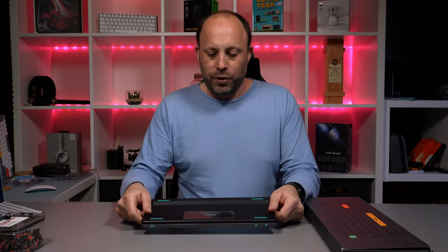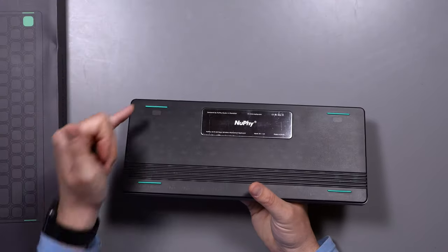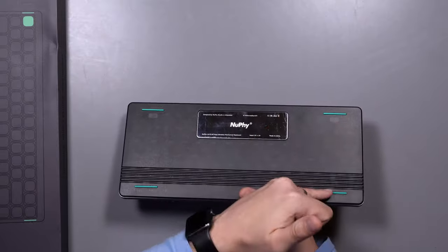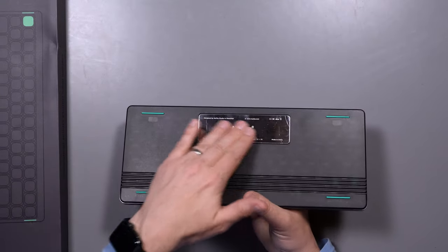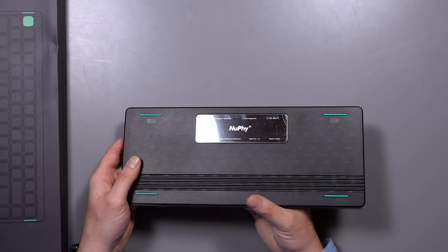And if we swap it over to the bottom, you can see that it's nice and tidy on the bottom here. We've got low profile sort of rubber feet, to stop it from sliding around on your desk. And then we've got a nice metal plate that tells you about your Nufi keyboard.